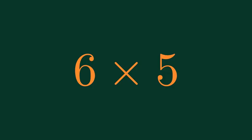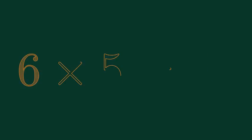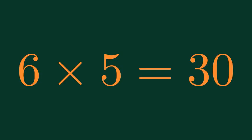What is 6 times 5? 6 times 5 is equal to 30.